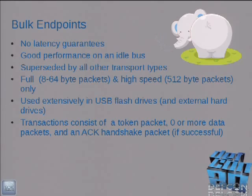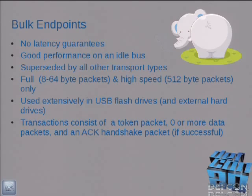Bulk endpoints — the good stuff. Bulk endpoints are used for mass storage devices. They don't have any guarantees on latency, but if the bus is idle — which it usually is — you have pretty good performance. They get superseded by any other kind of transport on the bus. For full speed — that whopping 12 megabits per second — you're allowed eight 64-byte packets. Keep that number in mind for later, it will be relevant. For high speed transfers you can use 512-byte packets. This is used extensively in flash drives and external hard drives.